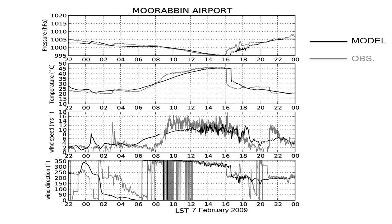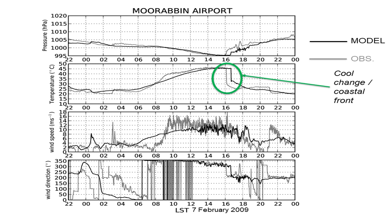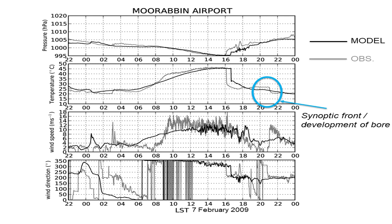There'll be three periods I'll focus on: the daytime mixing — what processes lead to that gustiness of the wind; the cool change or coastal front that came in in the late afternoon and early evening; and then a second change later in the evening, which is linked to the development of an undular bore inland.